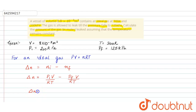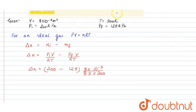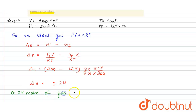So delta n = (P_initial − P_final) × V / (RT) = (200 − 125) × (8 × 10⁻³) / (8.3 × 300). On calculating, we get delta n = 0.24 moles of gas leaked.